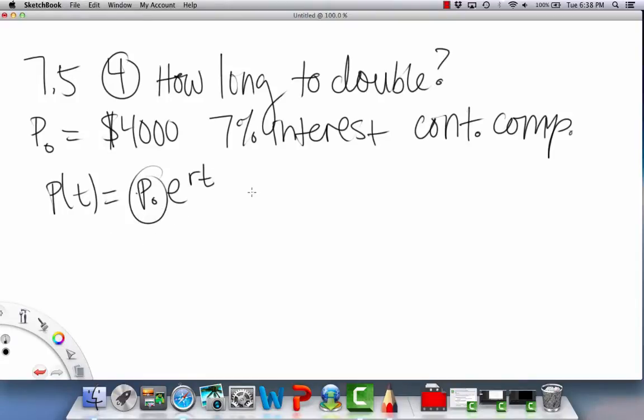So we can solve for t, just using the variables. So we want P of t to be 2 times our initial, right? That's what double means. So we'll set it up like this.